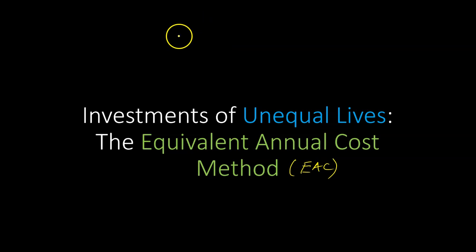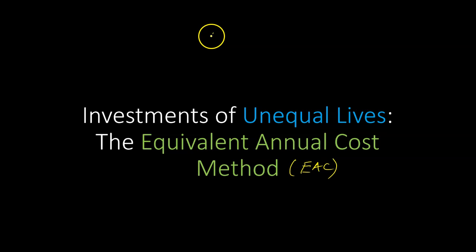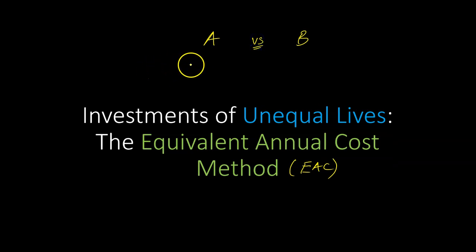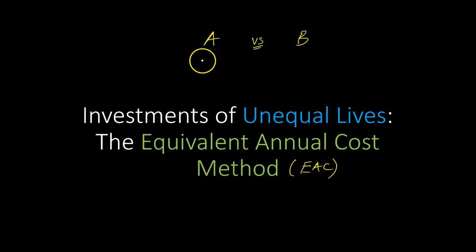In capital budgeting, there is something called the NPV rule, and it basically says that if you have two projects — project A and project B — and you have to choose between two of them, the NPV rule says pick the project with the higher NPV, because that project is adding more value to your business or to your firm.